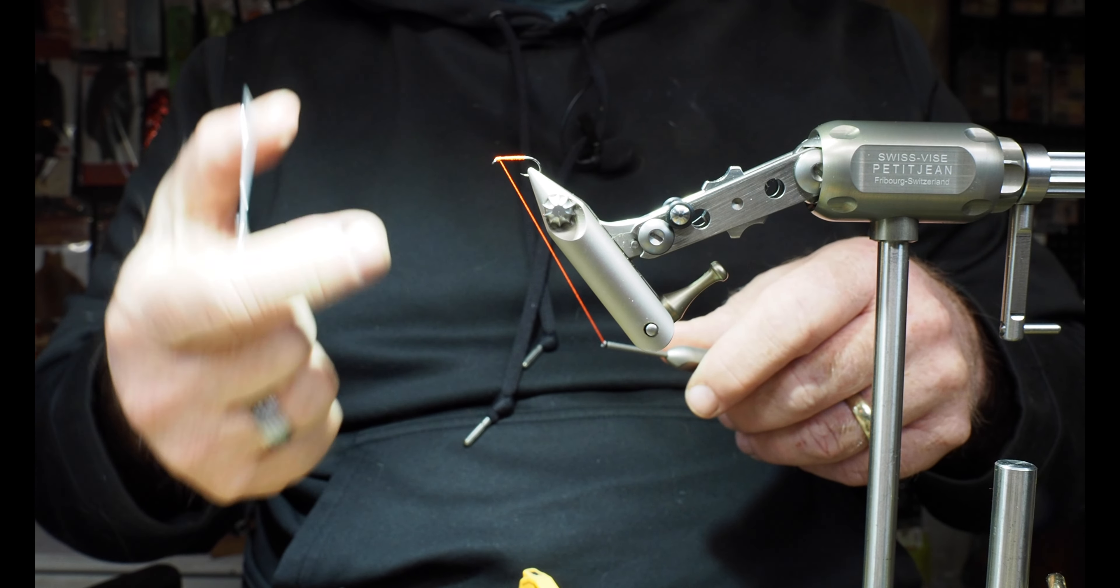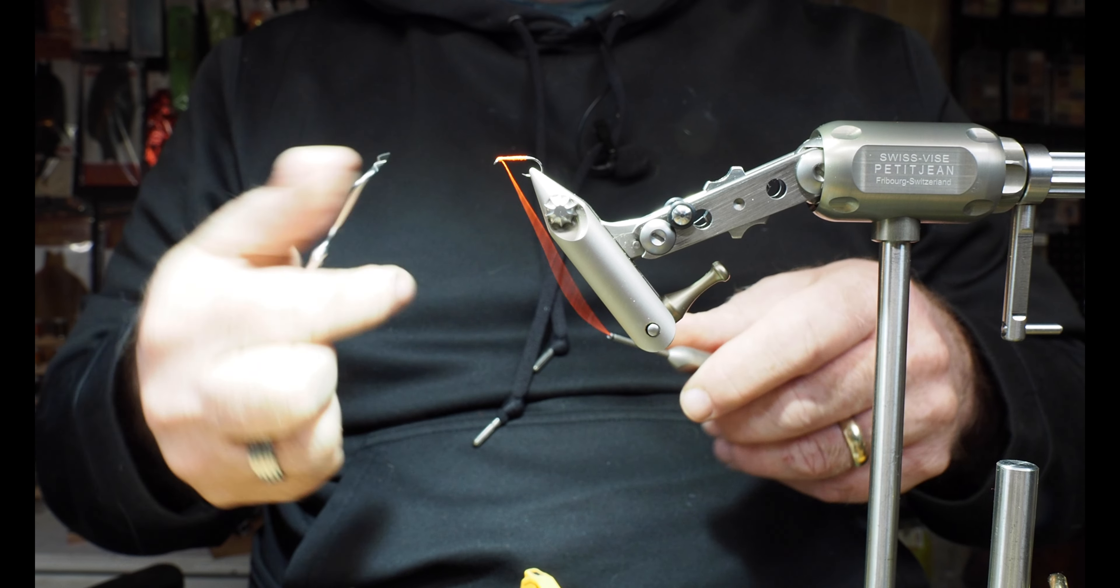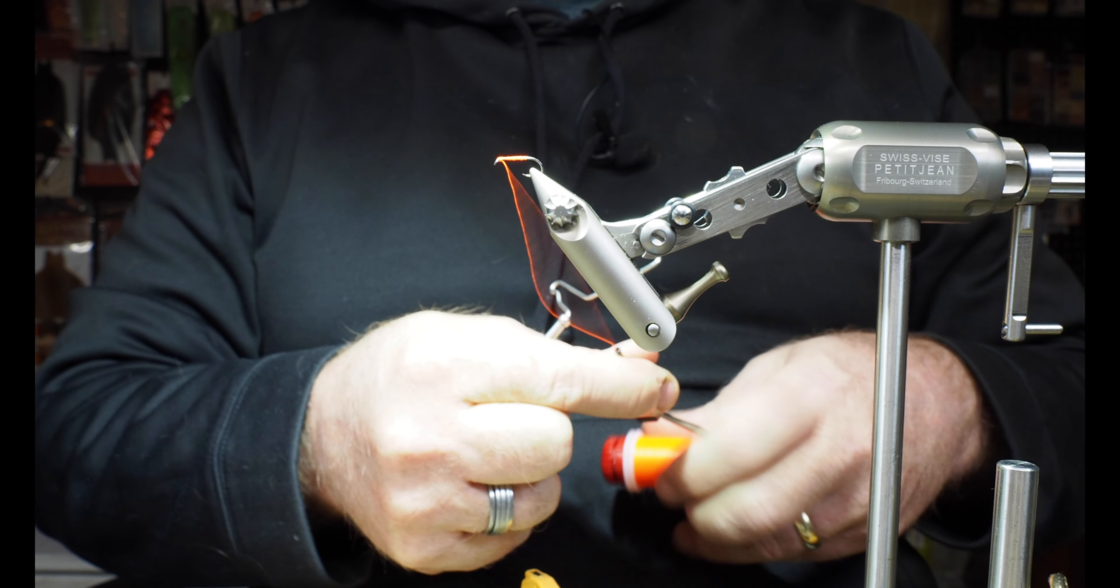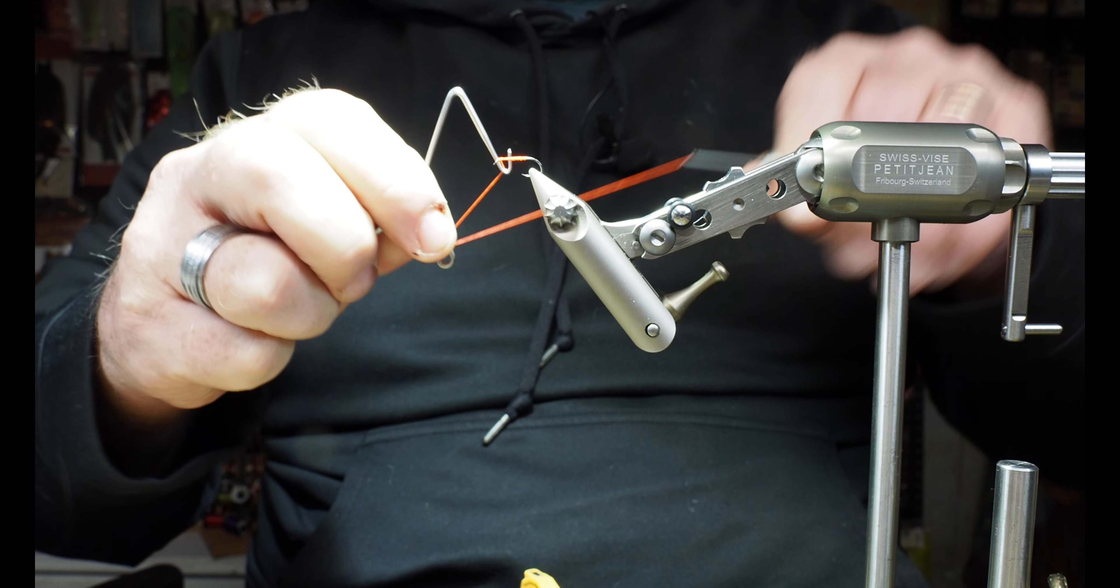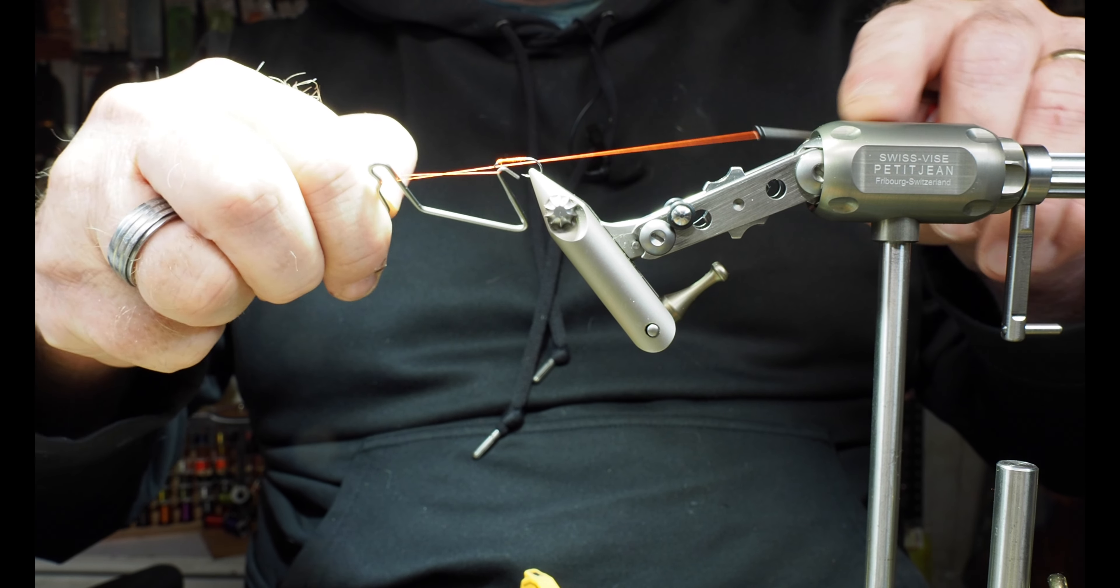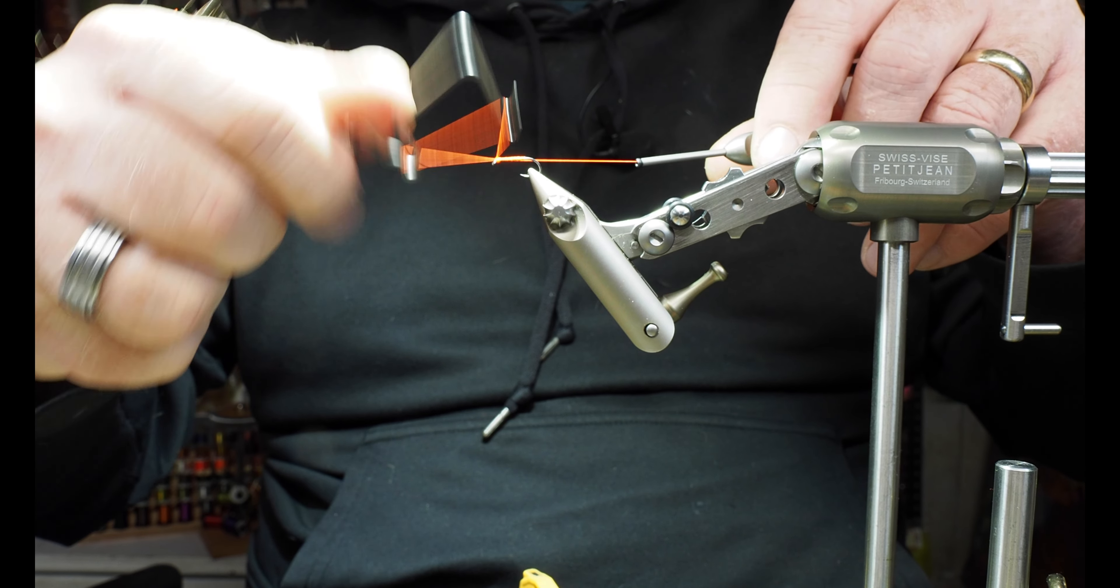That's pretty excessive. It's bending the hook, but what it's showing you is we're starting to build up a head here. Hopefully you can see that it's starting to get thicker. I'm pointing at it right there with my whip finisher. We'll exaggerate that a little bit by doing another one as well.